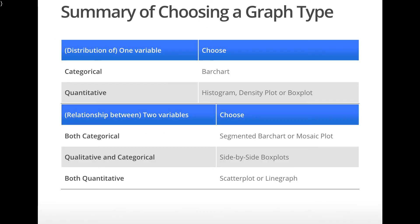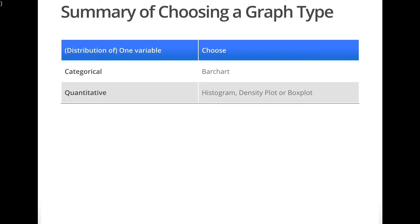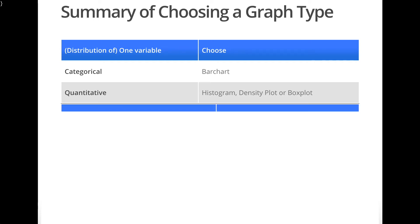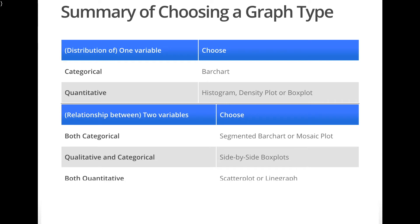Here is an overview table of how to choose a graph type based on your answers to those two questions. If you have one variable and are interested in its distribution, and the variable is categorical, then you could use a bar chart. If it's quantitative, then you could use a histogram, density plot, or box plot. If you have two variables and are interested in the relationship, and both are categorical, then you could use a segmented bar chart or mosaic plot. If one is quantitative and the other is categorical, then use side-by-side box plots. And if both are quantitative, then use a scatter plot. In the rest of this video, we'll see examples of each of these and also preview what you can do when you want to visualize more than two variables.